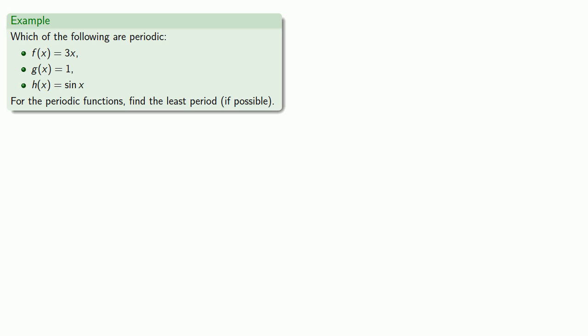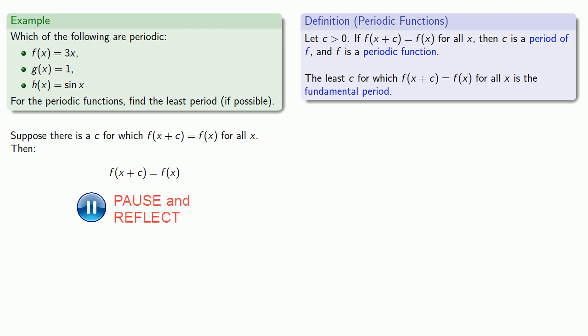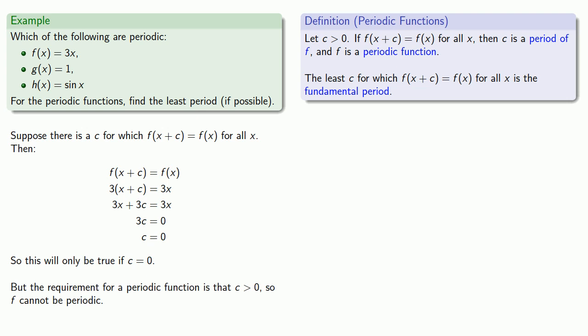Let's pull in our definition of periodic function. Suppose there is a c for which f(x + c) = f(x) for all x. Then, doing a little bit of algebra, we find that 3(x + c) = 3x, 3x + c = 3x, 3c = 0, c = 0. This equality will only be true if c = 0. But the requirement for a periodic function is that c > 0, so f cannot be periodic.